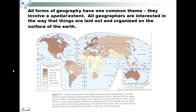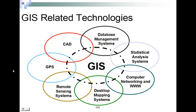When we talk about GIS, there are a lot of related technologies. It intersects with CAD — computer-aided design — as well as database applications, statistical analysis systems, and GPS, which we all have in our phones, and remote sensing systems, which is taking data from a distance.